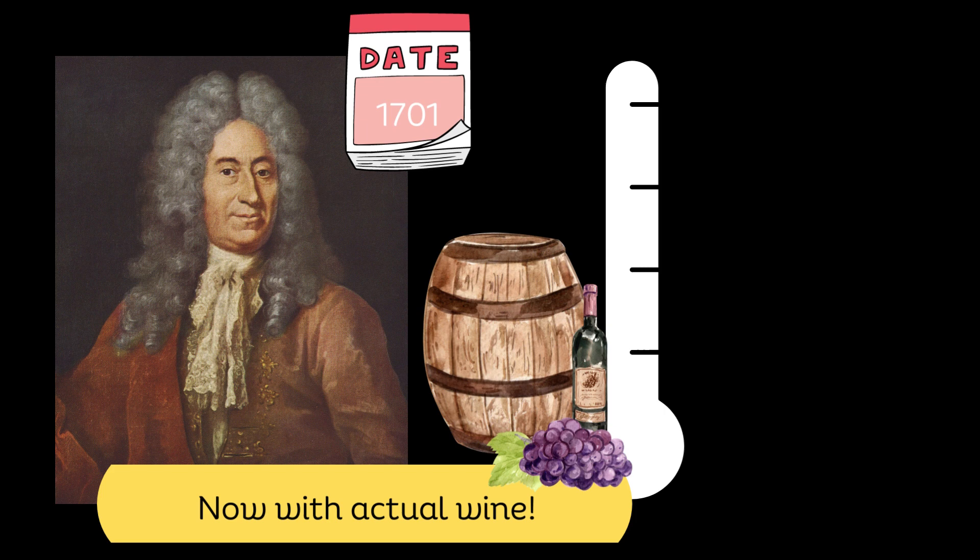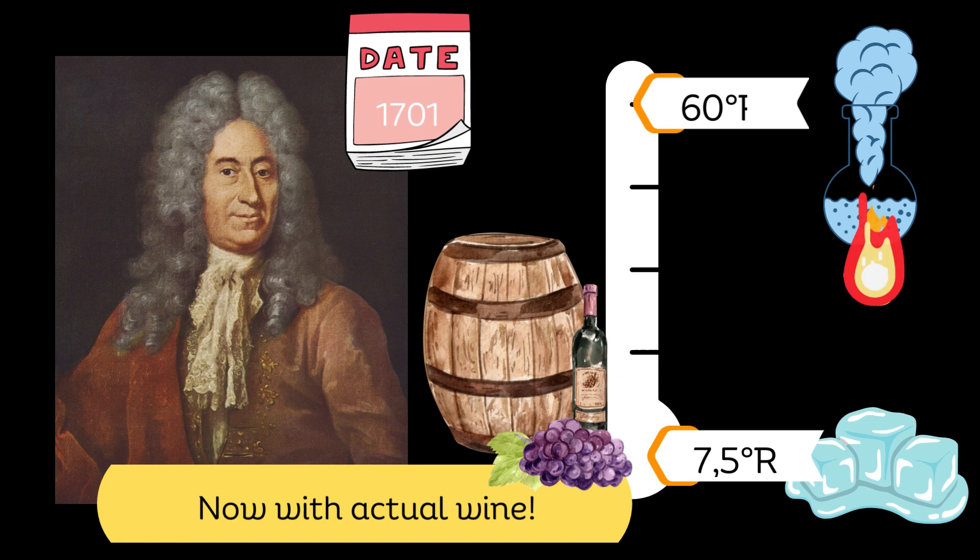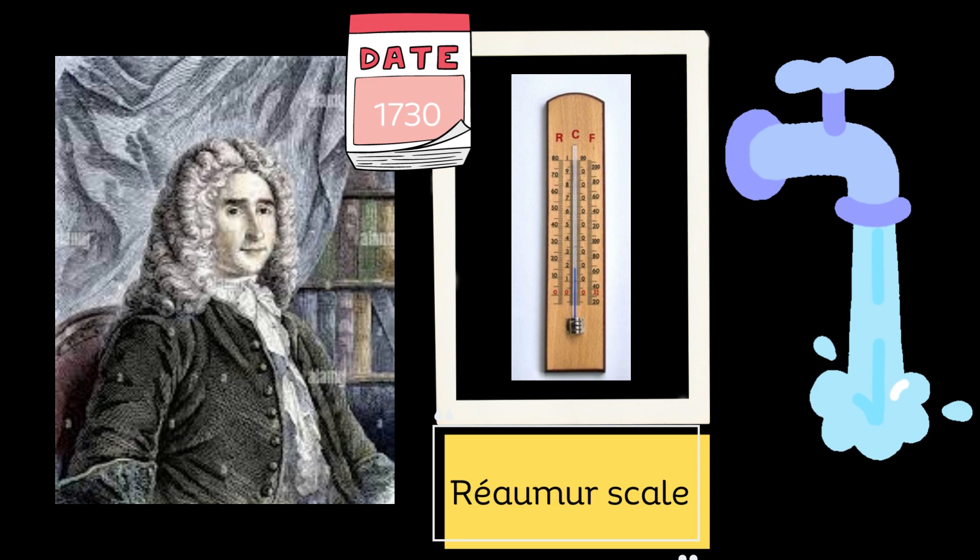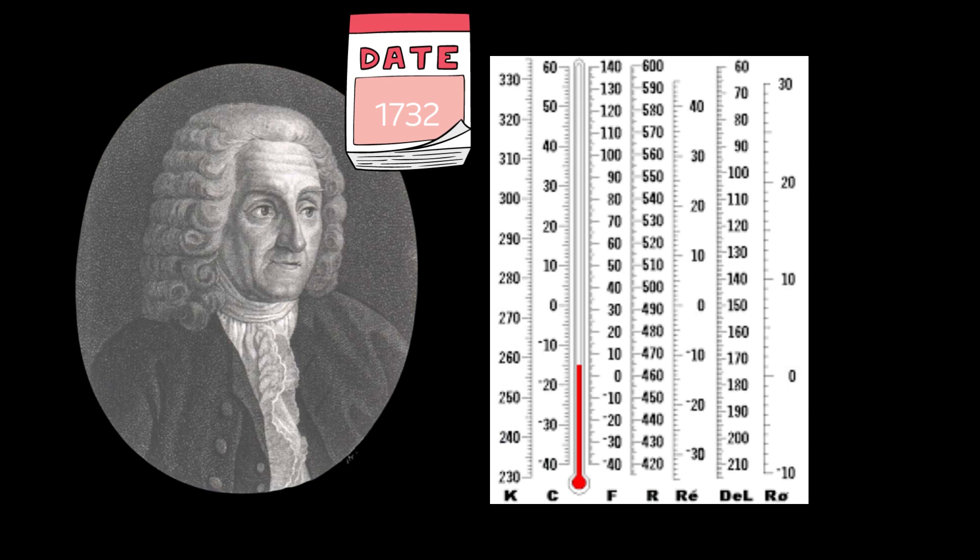The Reaumur scale was established in 1730, and had its zero set at the freezing point of water, with the 80-degree mark representing the boiling point of water. The Delisle scale was invented just two short years later, in 1732, and Joseph Nicholas Delisle set his scale by using the temperature of boiling water as the fixed zero point, just like the initial Celsius scale did.